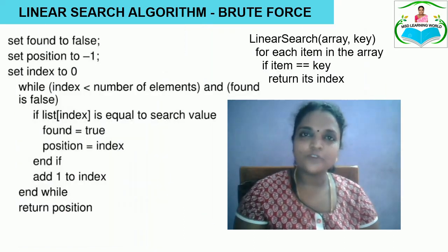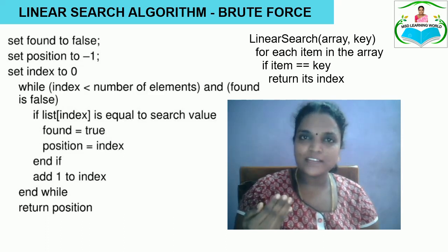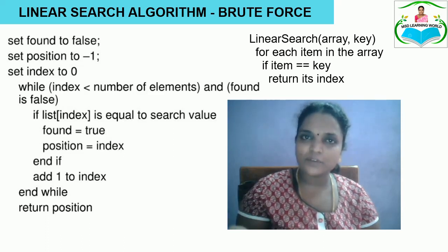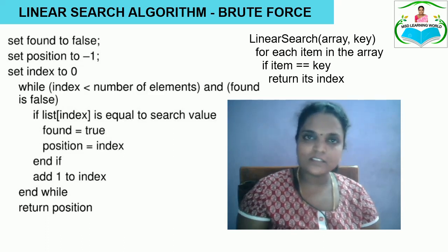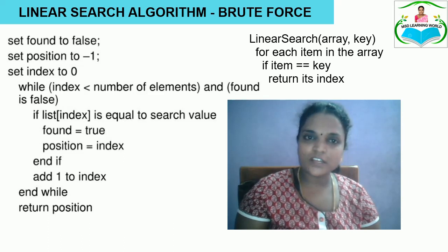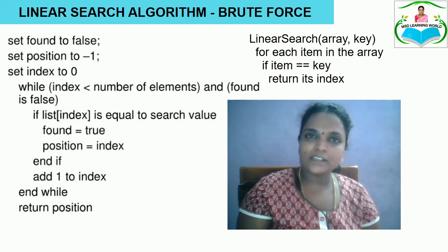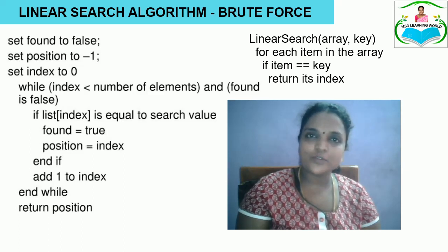Let us see the algorithm for linear search using the brute force approach. The input to the linear search algorithm is the array and the key value. We start the search for each item in the array and check whether the item equals the key. If the item is found, we return the index. Now let us see this in an expanded way. Initially, the array and key come into the algorithm. We set the variable 'found' as false and keep the position as -1, and set the index to 0.